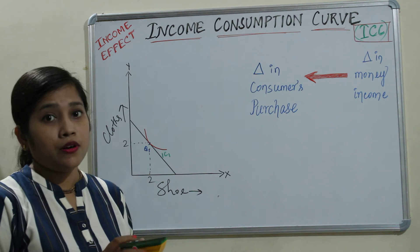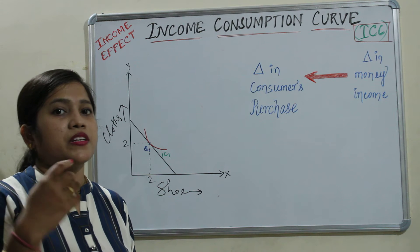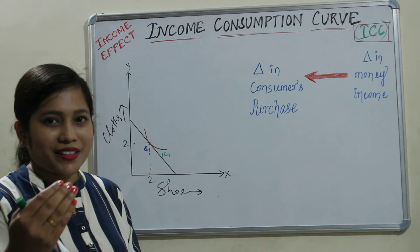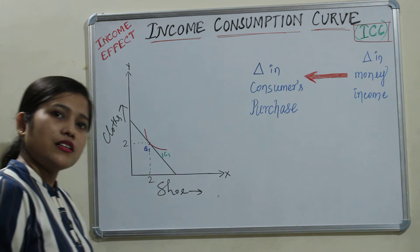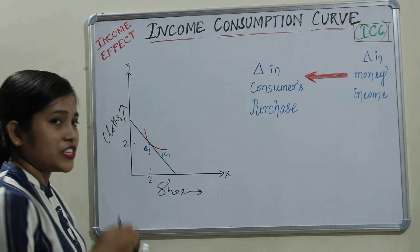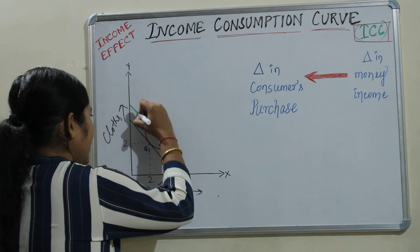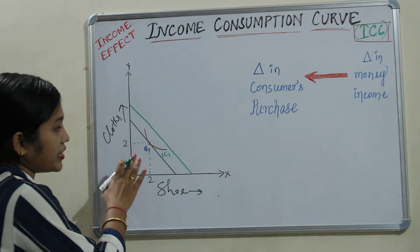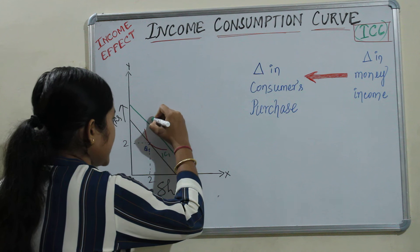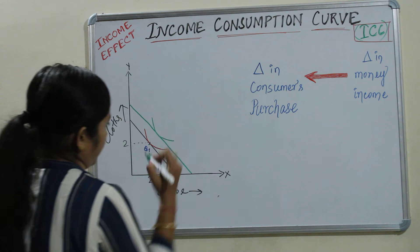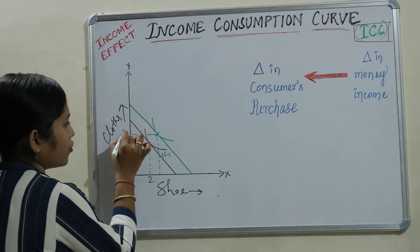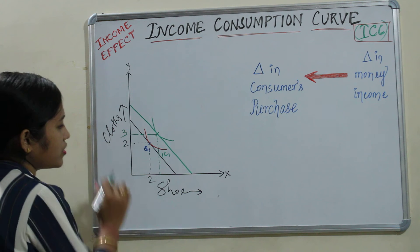In this amount of income the consumer has purchased two clothes and two shoes. Now the consumer's income has been increased. When your income increases, you will purchase more things. In case of income increase, the budget line shifts. Now your indifference curve will also shift because you will purchase more. So let's say your indifference curve shifts here, showing that when your income increases you will go for purchasing three clothes and three shoes.